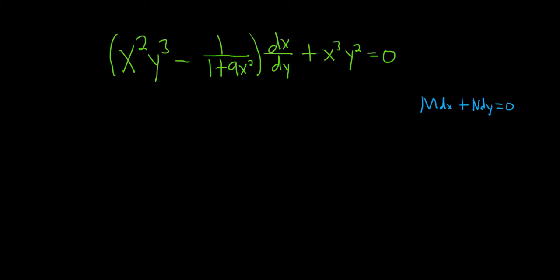So it's pretty easy to put it in this form. All you have to do is basically multiply everything by dy. So we'll put a dy here, put a dy here, and put one here. So these will cancel, and this will give us x² y³ minus 1 over 1 plus 9x² dx plus x³ y² dy, and all of this is equal to 0. Good stuff.